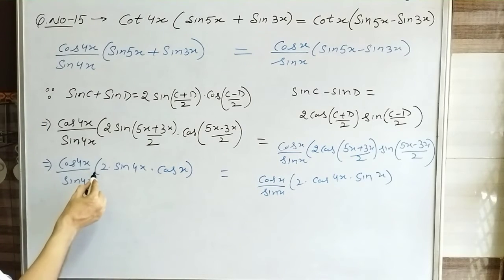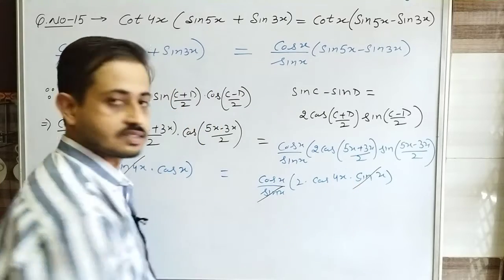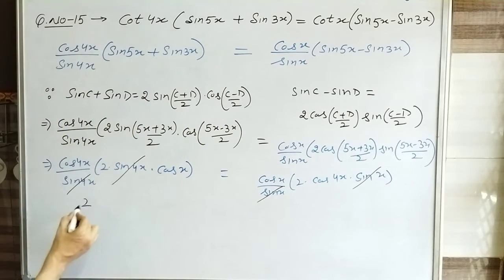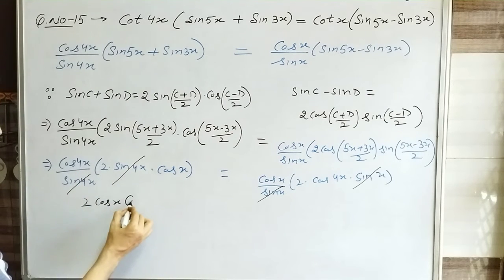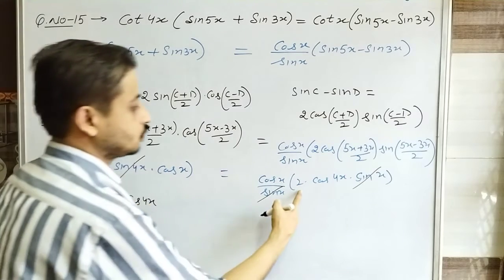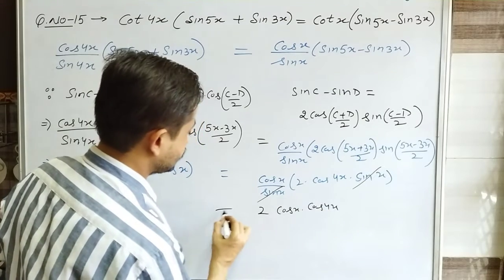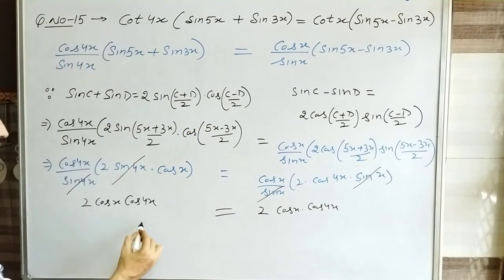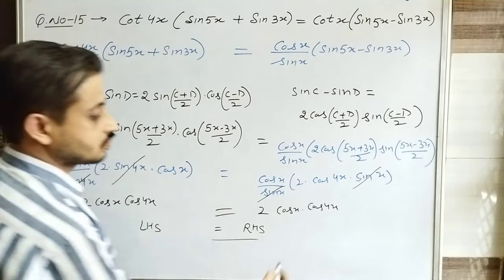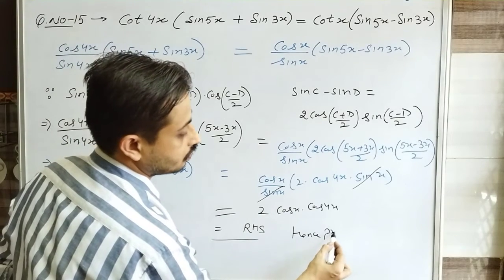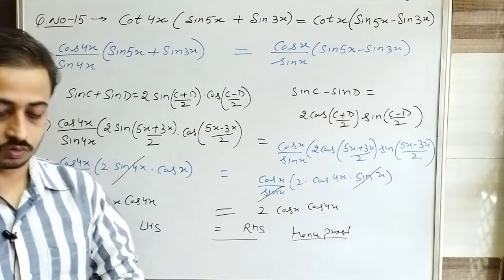After cancellation, what remains on the left is 2 · cosx · cos4x, and on the right also 2 · cos4x · cosx. Both sides are equal — hence proved. When you see a lengthy question, you can prove it using this approach.